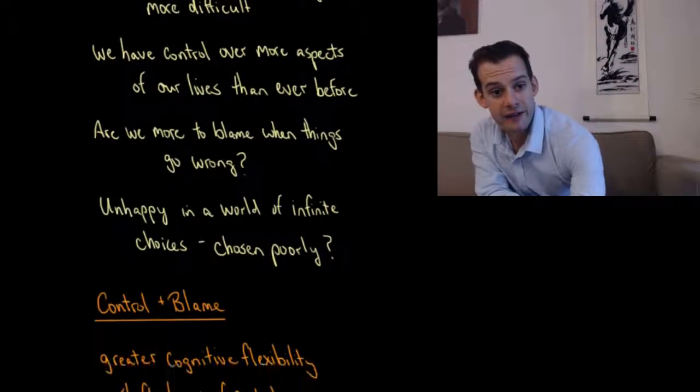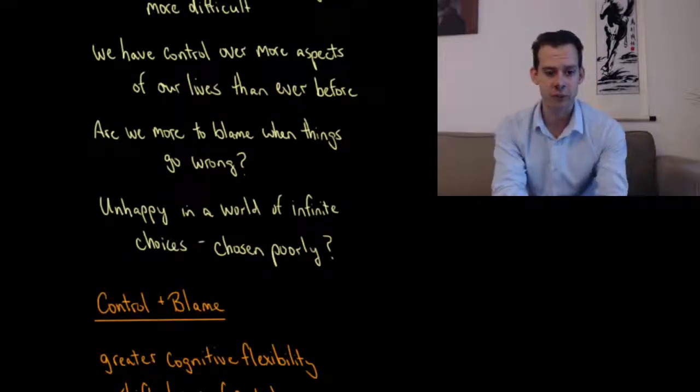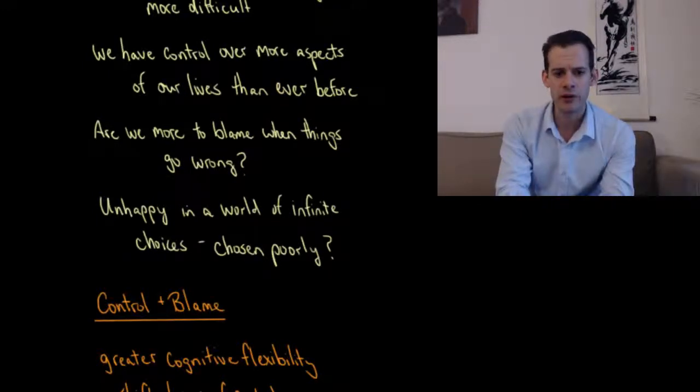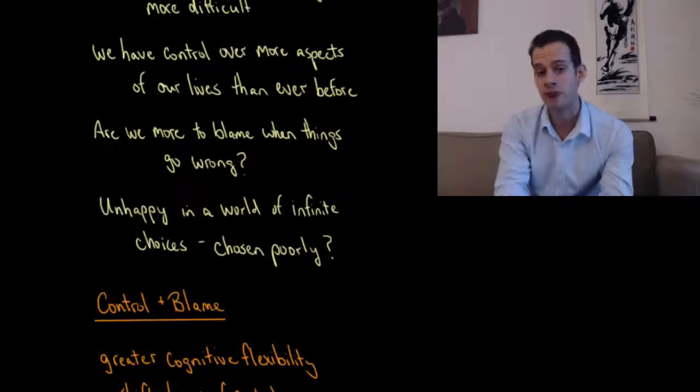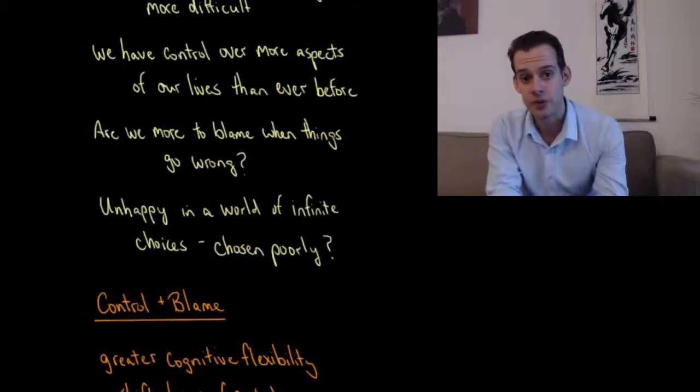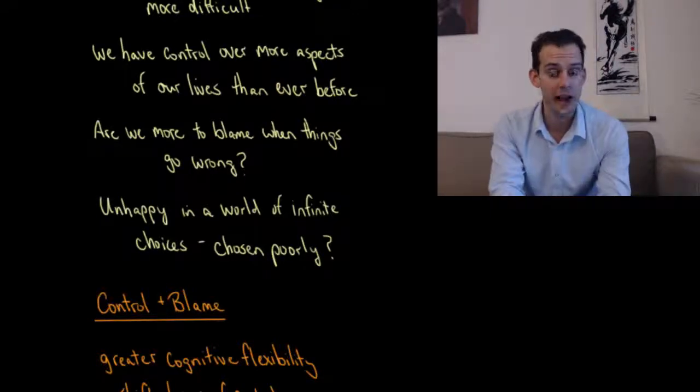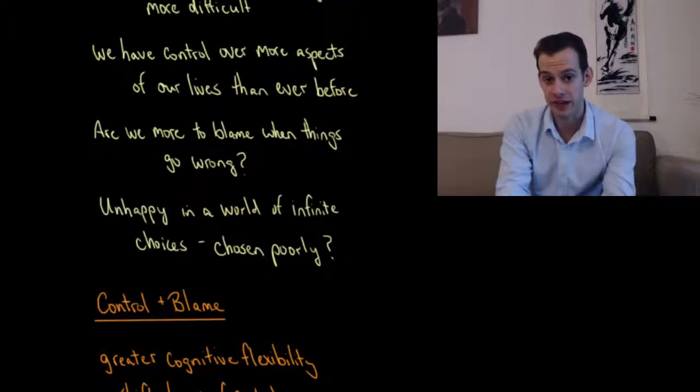If we've had unlimited choice in nearly all aspects of our lives, and yet we're still unhappy, then we might wonder if we've just chosen poorly. Are we the ones to blame if things have gone wrong and if we're unhappy with the results? Now it's hard to tell sometimes. Sometimes our choice might not have anything to do with our present unhappiness or our present circumstances. But we might wonder how much we're to blame and how much control we really had over the current circumstances.